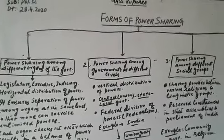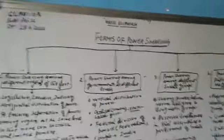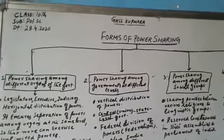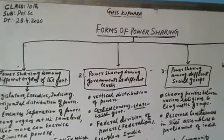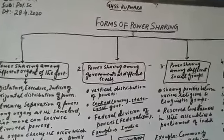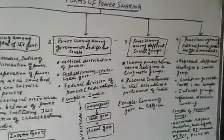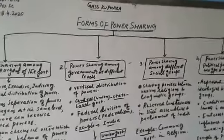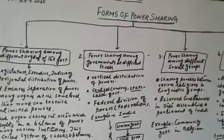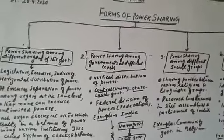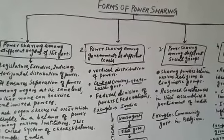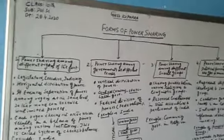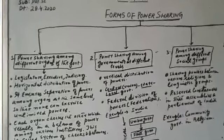The reason given for keeping power with one entity was that if we share or distribute power, then decision-making for the government would take time — quick decisions would not be possible. But this notion changed when the concept of democracy came.